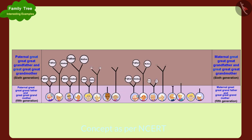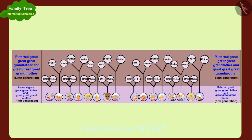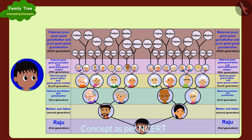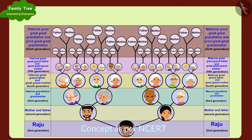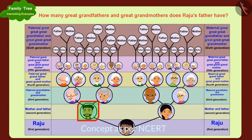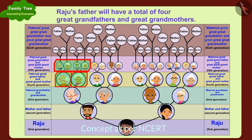In this way, there will be 32 people in Raju's sixth generation. How many great grandfathers and great grandmothers does my father have? Children, can you find the answer to Raju's question? Raju's father's paternal great grandfather and great grandmother's parents...